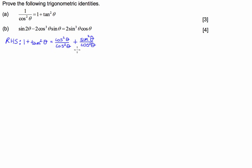So I'm going to have cos squared theta plus sin squared theta all divided by cos squared theta. And here, hopefully you can recognise that this part at the top is our Pythagorean identity.